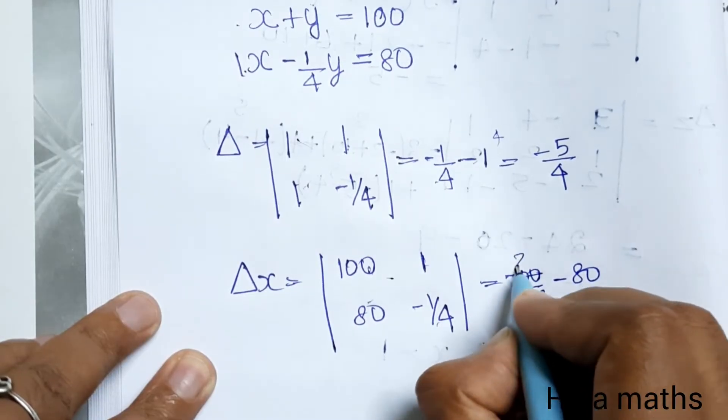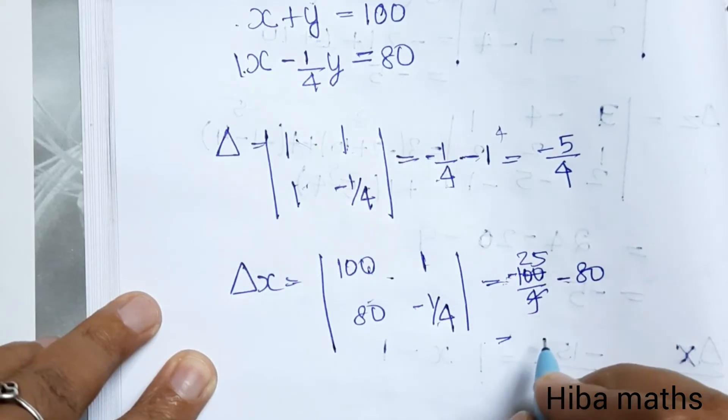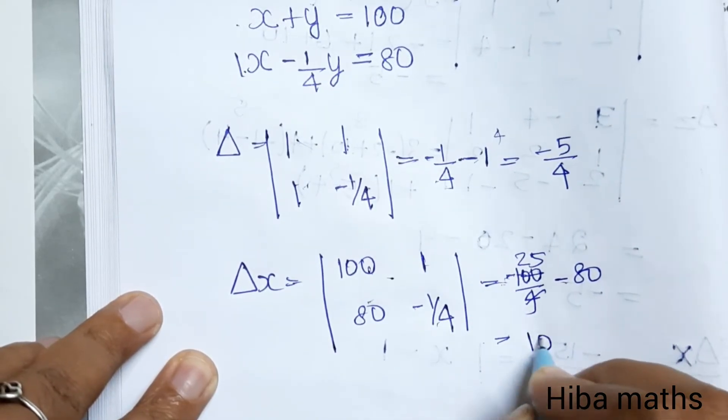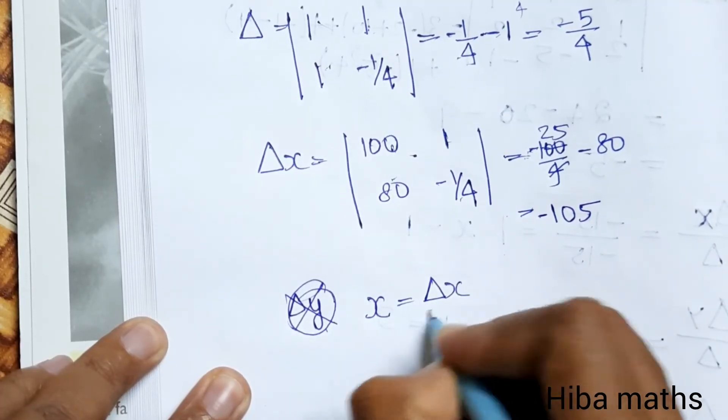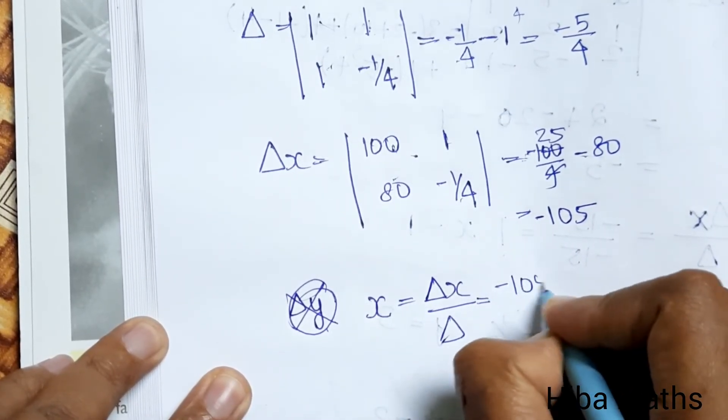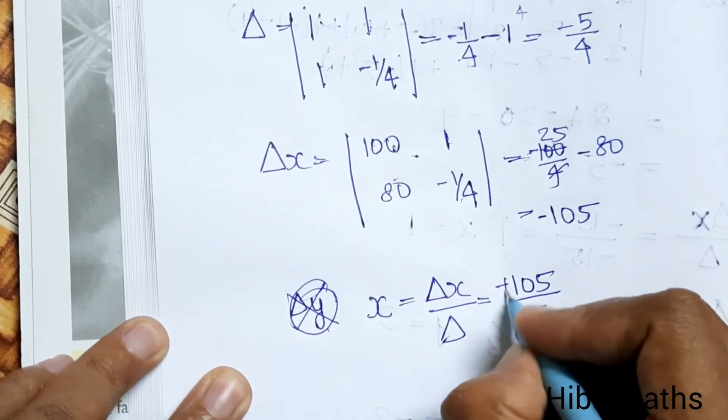1 times 4 is 4, so if we add, 105 - 105x equals determinant x by determinant, which equals -105 by -5/4. Minus minus cancel...